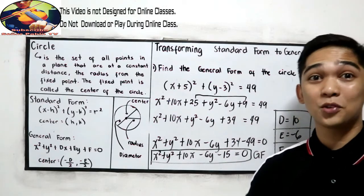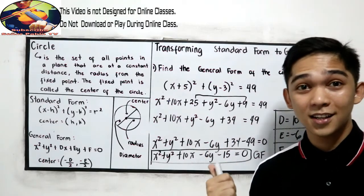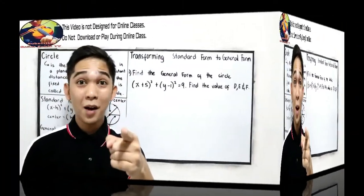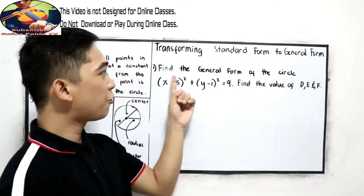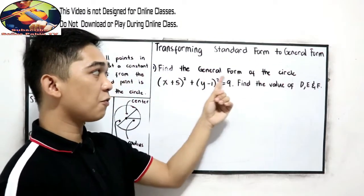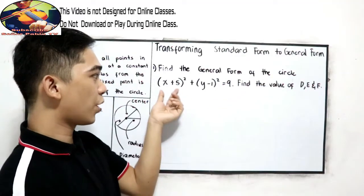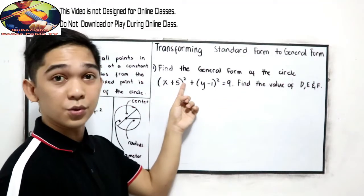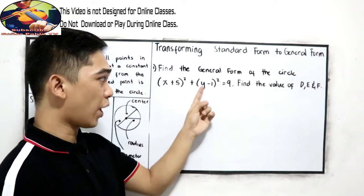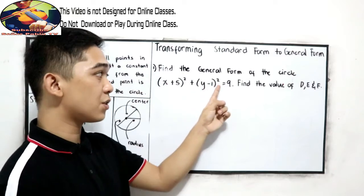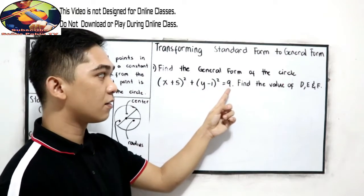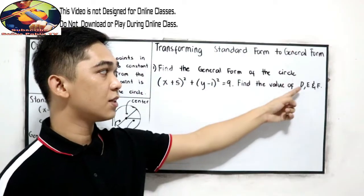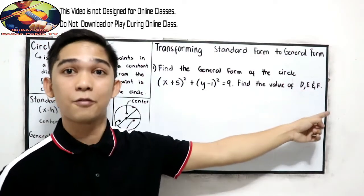Okay, that's how to transform standard form to general form. Now it's your turn. I want you to answer the next problem. Your problem is: find the general form of the circle — the quantity x plus 5 raised to the 2nd plus the quantity y minus 1 raised to the 2nd is equal to 9. Find the value of D, E, and F.